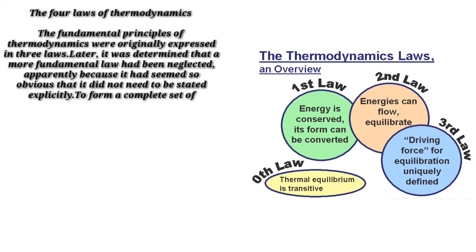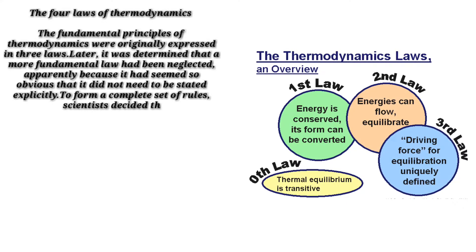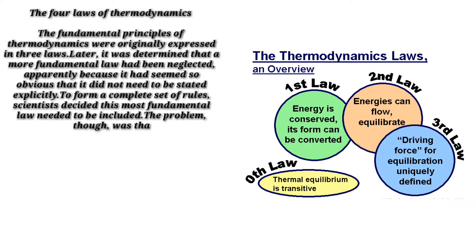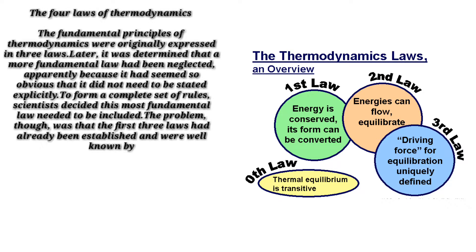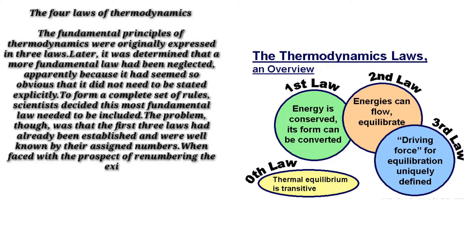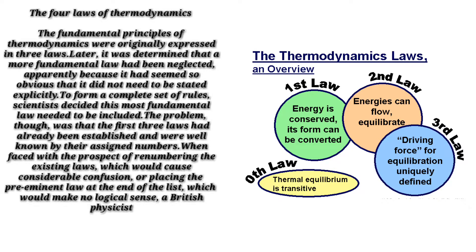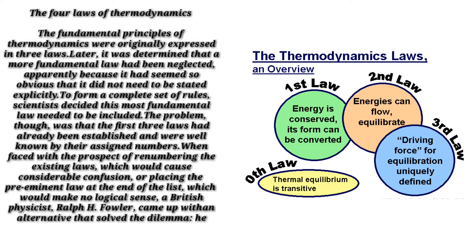To form a complete set of rules, scientists decided this most fundamental law needed to be included. The problem was that the first three laws had already been established and were well known by their assigned numbers. When faced with the prospect of renumbering the existing laws, which would cause considerable confusion, or placing the preeminent law at the end of the list, which would make no logical sense, a British physicist, Ralph H. Fowler, came up with an alternative that solved the dilemma. He called the new law the zeroth law.